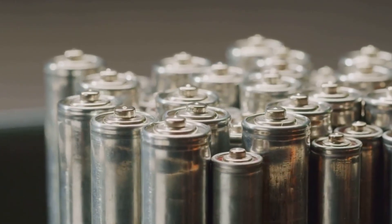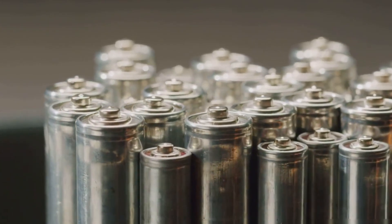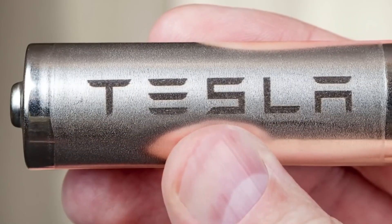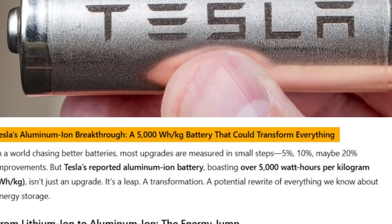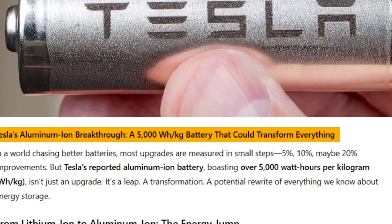After nearly seven years of silent development in Tesla's Nevada lab, the aluminum-ion battery is finally ready for commercial scale. This isn't speculation, it's real.